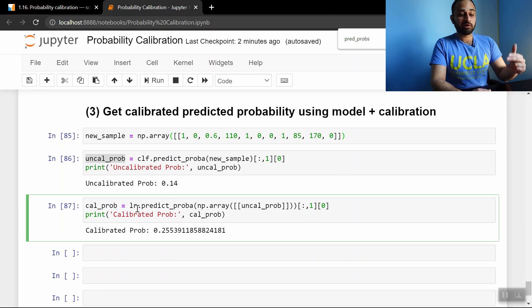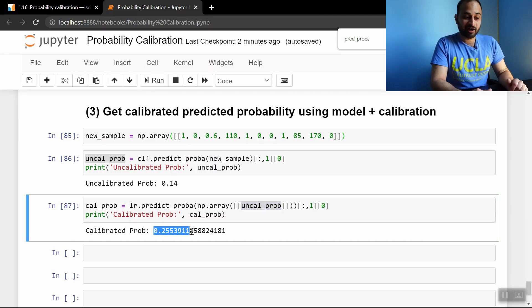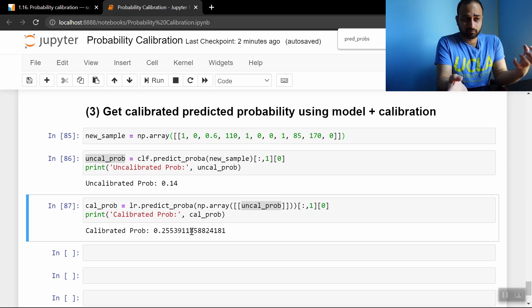But we know better. We go ahead and run this uncalibrated probability through the calibration layer. We find the true, more accurate calibrated probability for this person having heart disease is actually 25%. And when you put it in this kind of framework where you're trying to predict if someone has heart disease or not, it's probably a good idea to calibrate. You want to know whether it's a 14% chance or 25% chance. That's kind of a big gap.